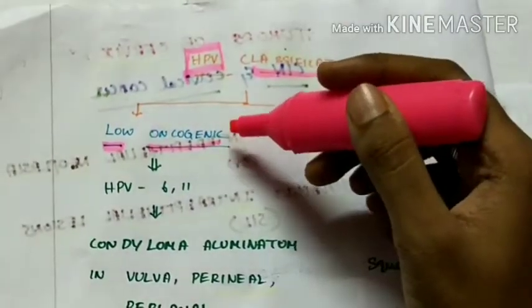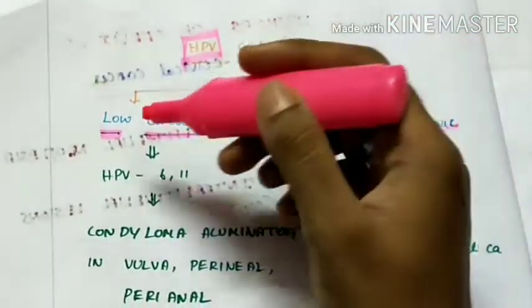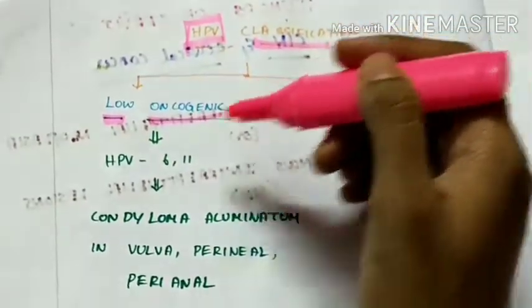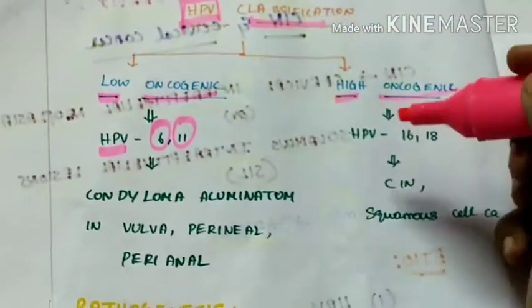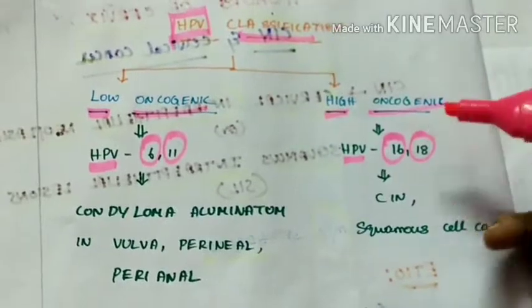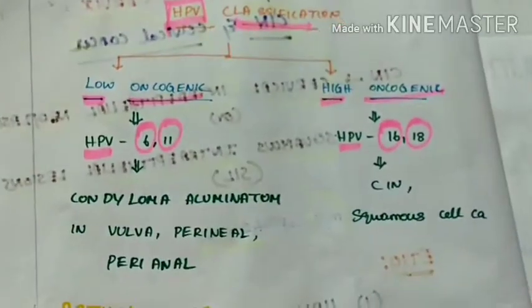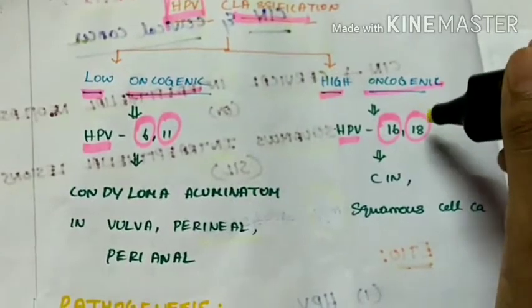Low oncogenic and those having high oncogenic potential. Oncogenic potential is the ability to cause cancer. So the low oncogenic types are HPV 6 and 11 and the high oncogenic types are HPV 16 and 18. So the 16 and 18 types HPV have more tendency to cause cervical cancer.